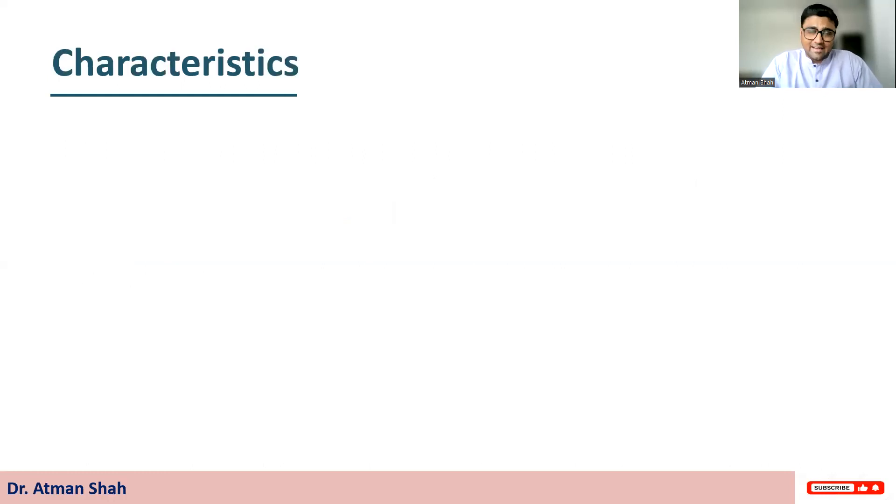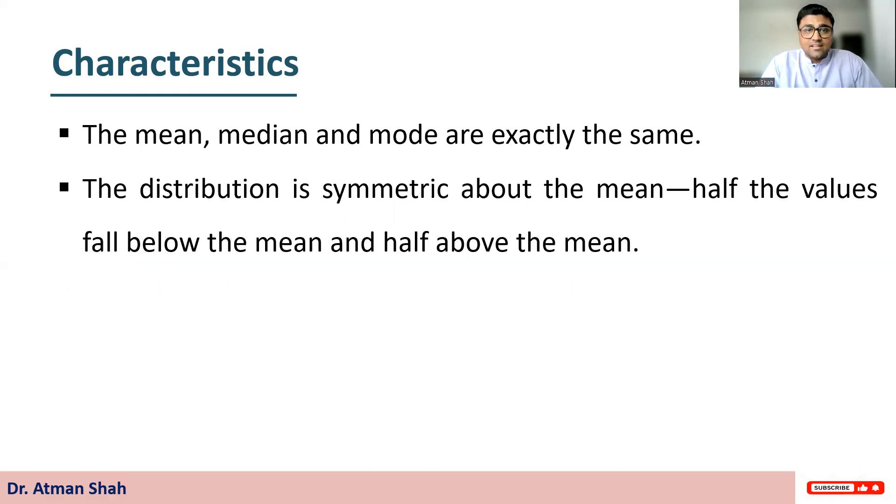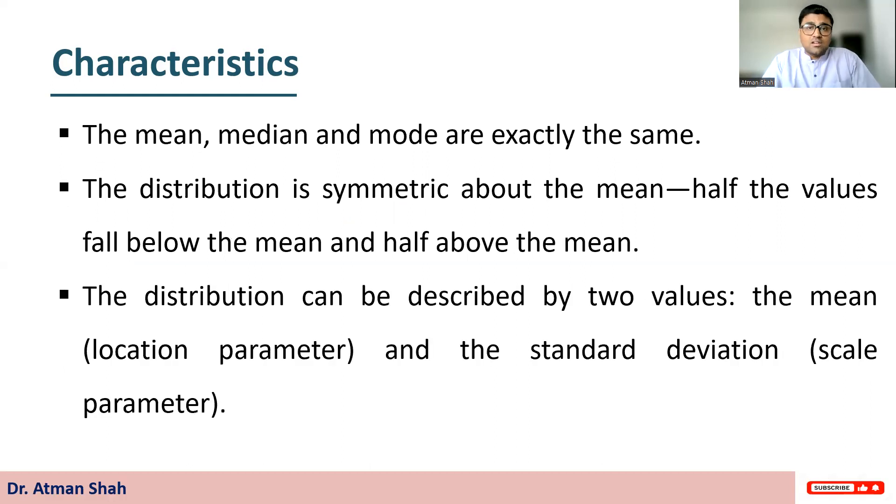Now what are the characteristics? The value of the mean, median and mode are exactly same. And the distribution is symmetric about the mean. That means half the values fall below the mean and half above the mean. Now the distribution can be described by two values: the mean that is a location parameter and the standard deviation which is our scale parameter.